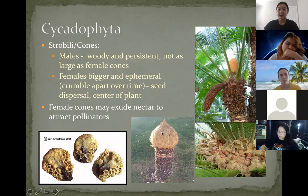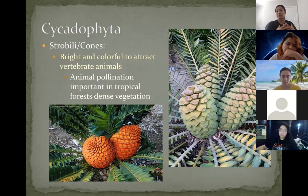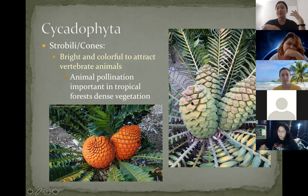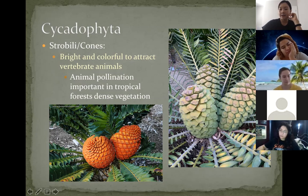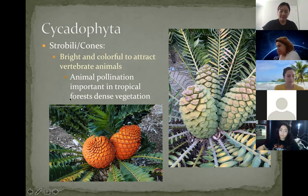The female cones can exude nectar to attract certain pollinators. For cycads, most of the time they are actually dispersed by vertebrate animals, which is why they are really colorful and bright — to attract specific animals. Most cycads are found in really dense vegetation, specifically tropical forests, so animals disperse their seeds much farther than wind could. The photo here is one taken in the Mesozoic garden of Encephalartos with three female cones that haven't fully opened yet, but you can see the red seed peeking through where the cone is just starting to open.